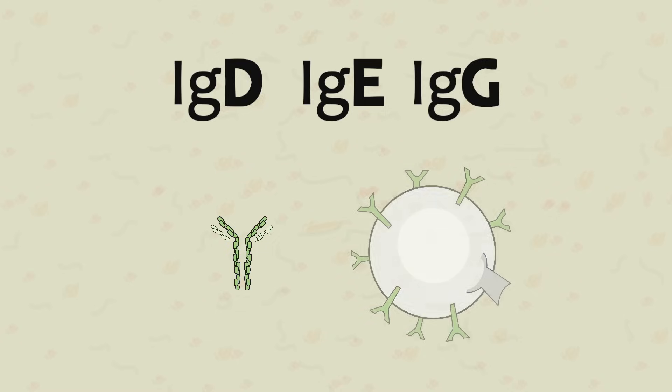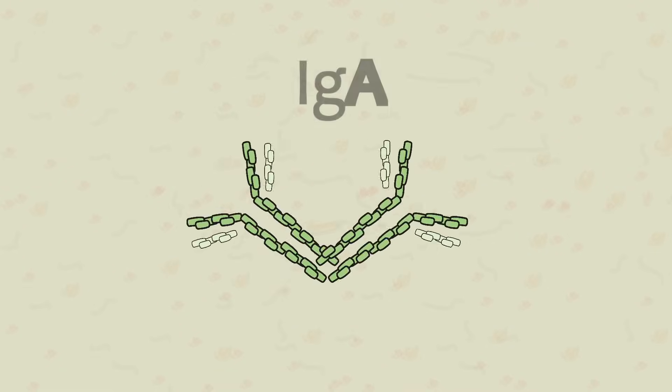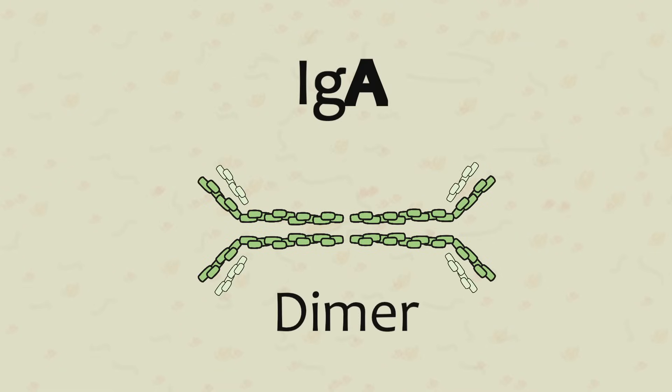IgD, IgE, and IgGs all use a single Y-chain whether they stand alone or as receptors connected to white cells. IgAs use a double Y-chain, which is called a dimer.